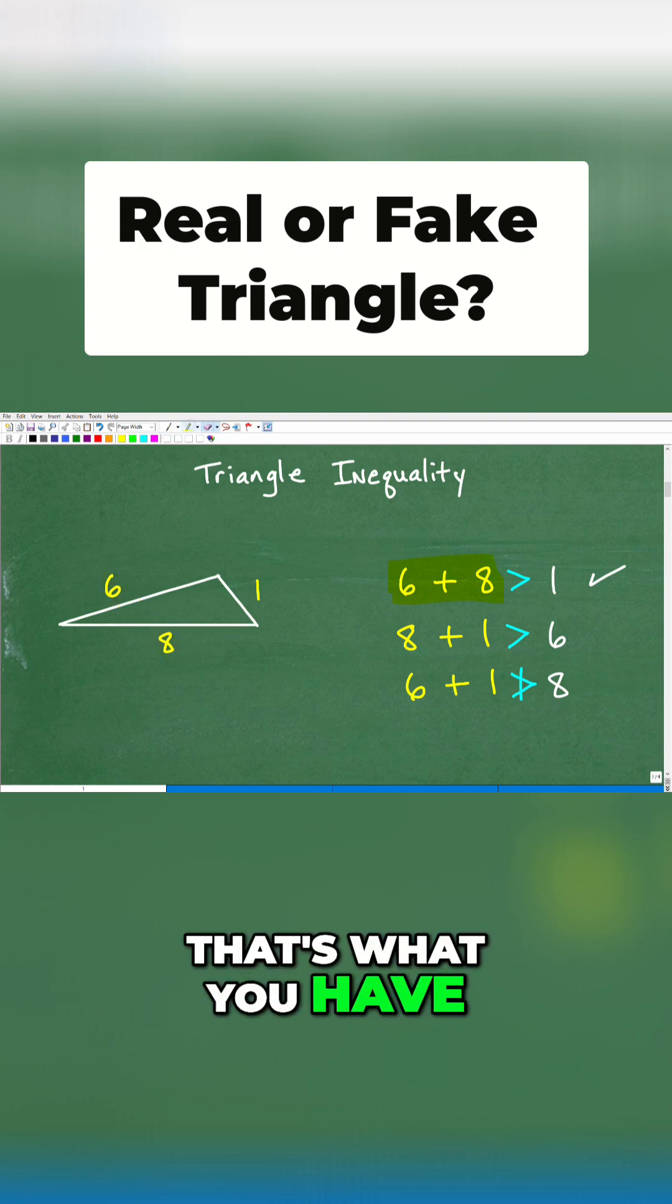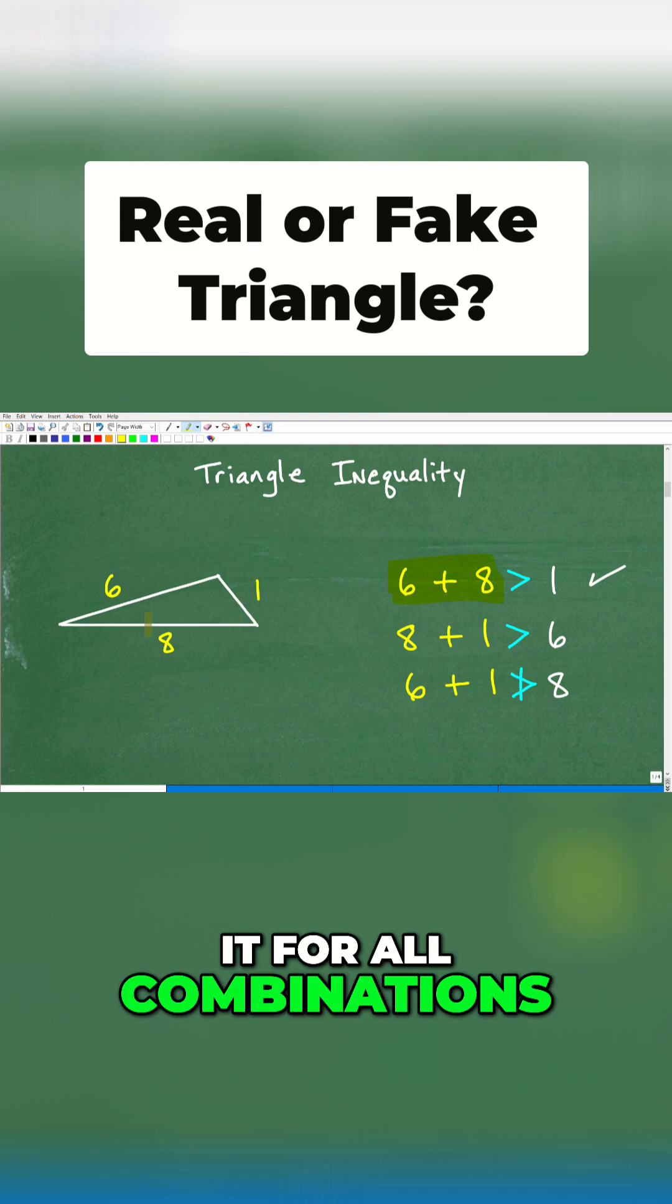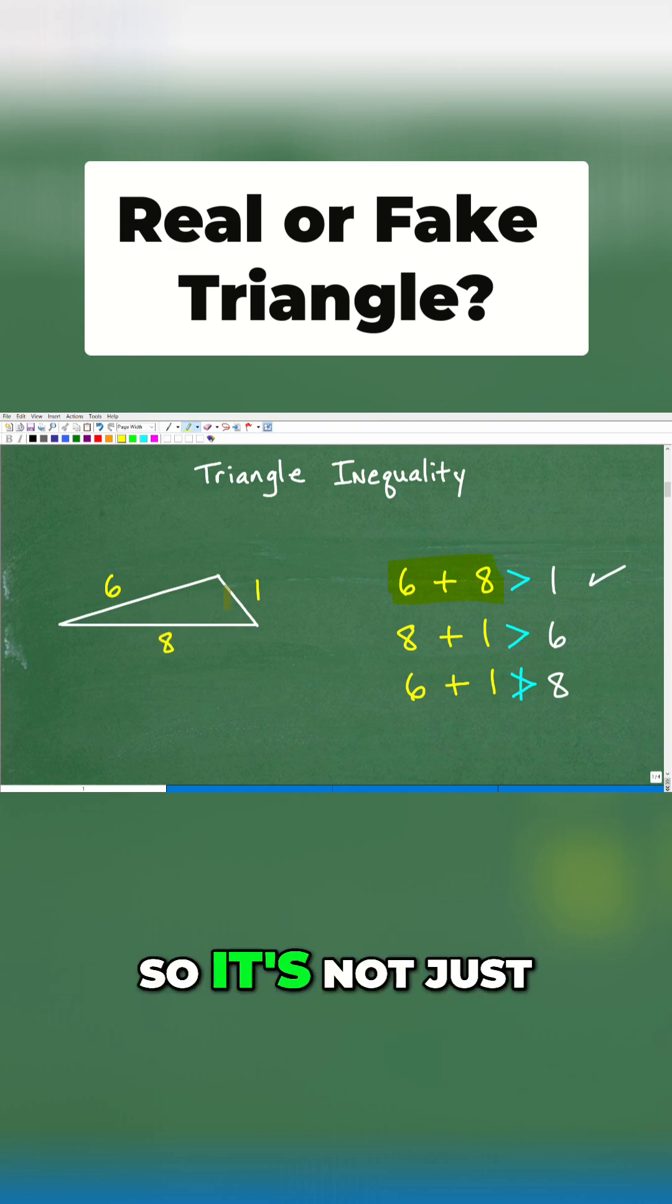That's what in a real triangle you have. But here's the deal. You have to test it for all combinations, all three possible, all three sides. So it's not just one side. You've got to continue to test.